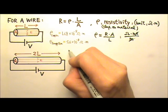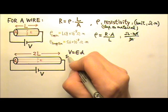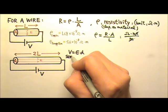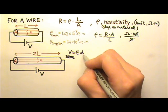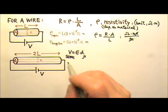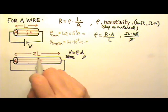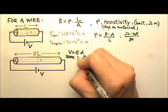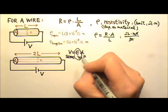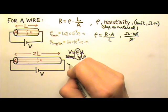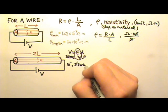Since V equals Ed, for both wires there's the same voltage. But the second wire is twice as long, meaning D is larger. That means the electric field for the longer wire must be weaker. A weaker electric field means the electrons would have a slower drift velocity.